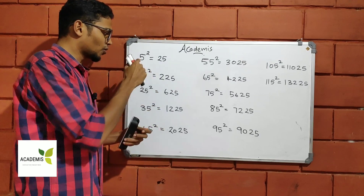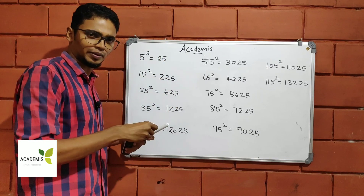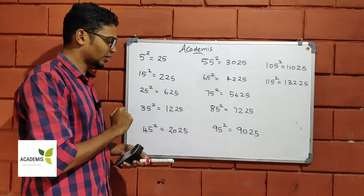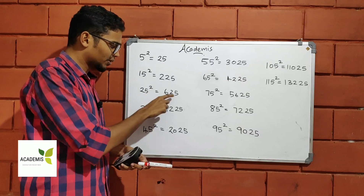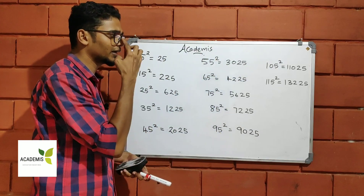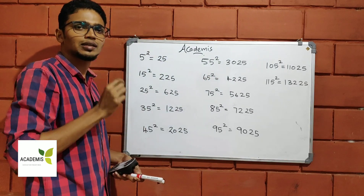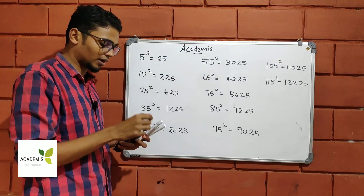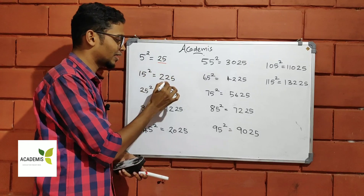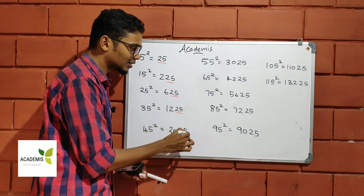The values we will look at are 5 squared, 25, 15 squared, 25, and so on. I will take any number ending in 5 and show you how to square it easily.